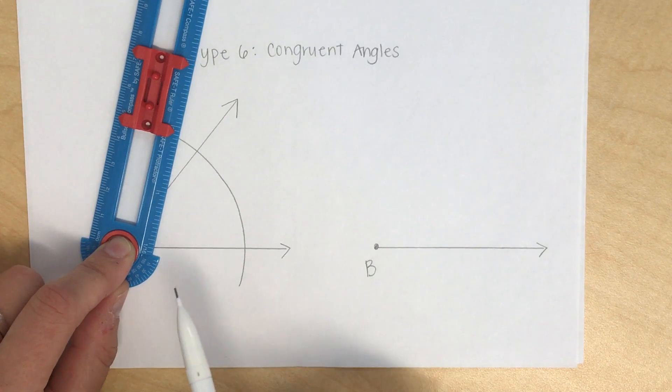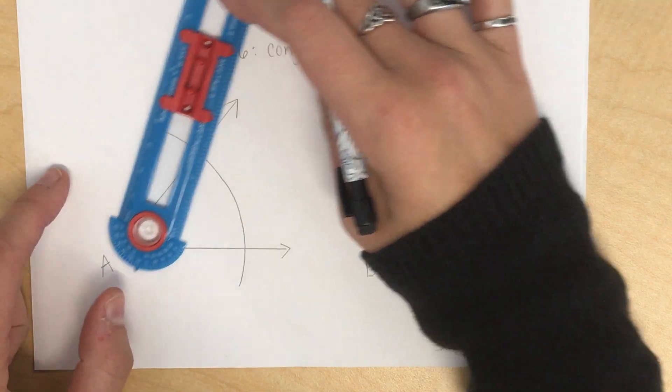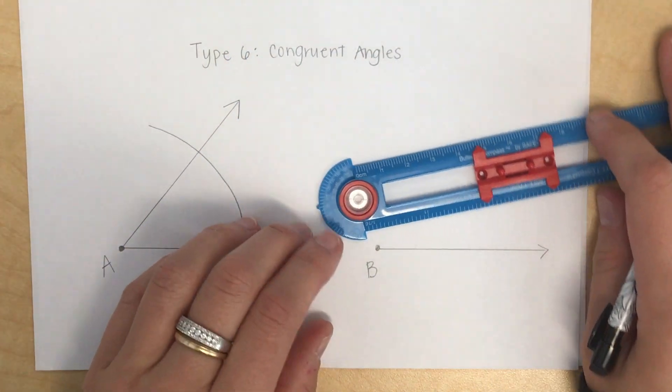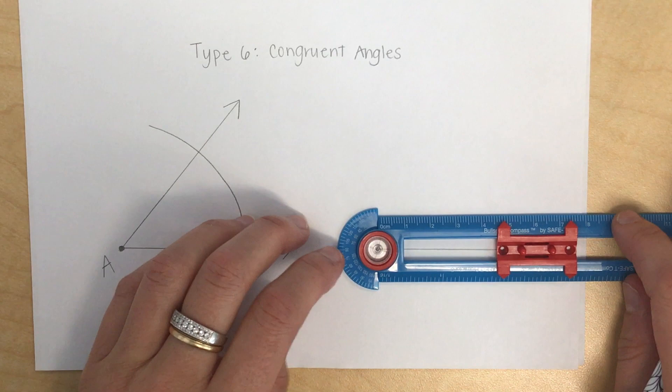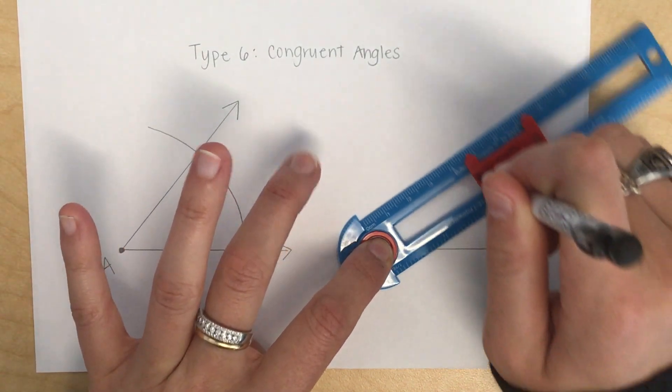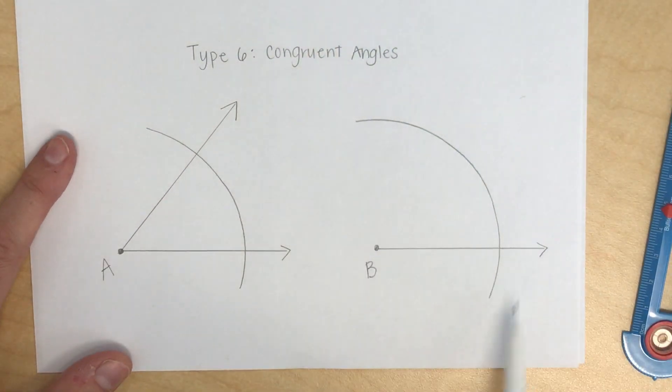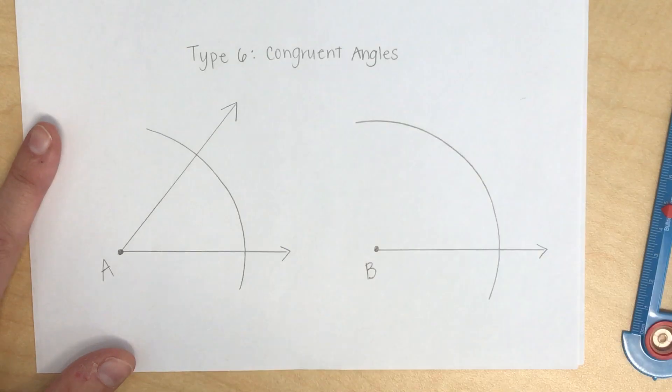Now, without moving your slide rule, without changing your radius, I'm now going to come over here to point B. I'm going to do the exact same thing. Do not change your radius, otherwise you will not get the same answer or the same construction. So I'm going to draw a nice big arc here because I want it to intersect on the other side.